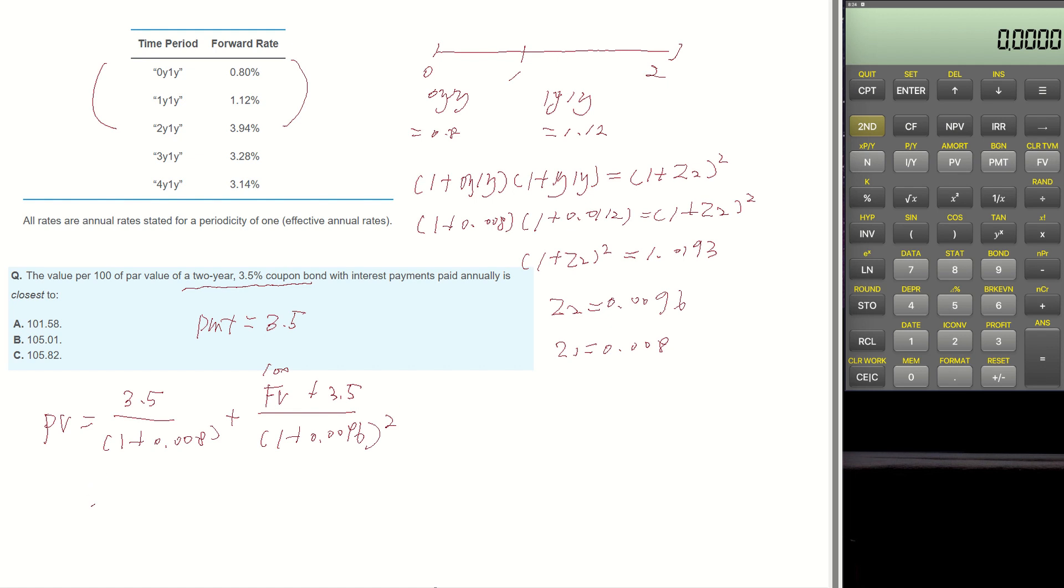This becomes 3.4722 plus 101.5411, which equals 105.01.